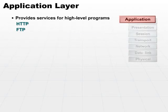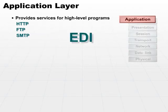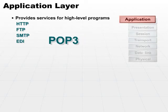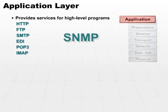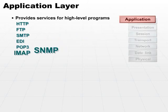Some additional application layer protocols would be SMTP. EDI is application layer as well. POP3 is used to deal with mail. IMAP and SNMP are also application layer protocols. IMAP, of course, is another email protocol. All these protocols are programmed in at the application layer.